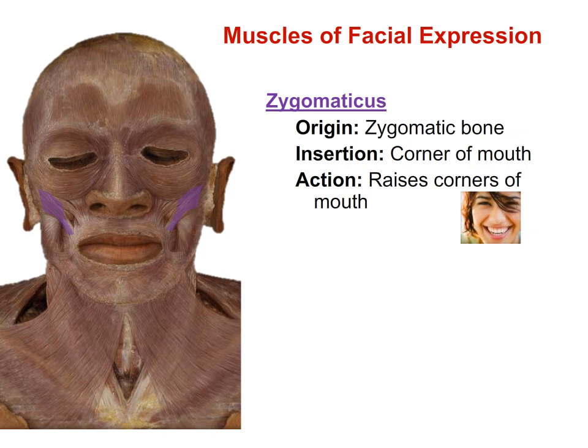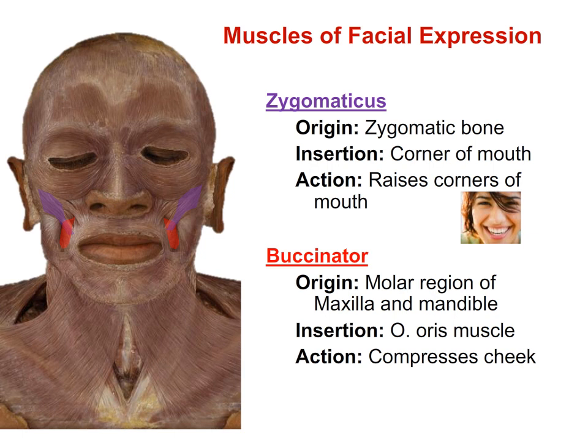Our next muscle is the zygomaticus. The zygomatic is the cheekbone, so the origin is the zygomatic bone, and the insertion is the skin of the corner of the mouth. The function of the zygomaticus is to raise the corners of the mouth, as in smiling. Another facial muscle located just inferior to the zygomaticus is the buccinator. Its origin is the molar region of the maxilla and mandible, and the insertion is the orbicularis oris muscle. The buccinator compresses the cheek, holding food on the tops of the molars and premolars for efficient chewing, and is also important for whistling.